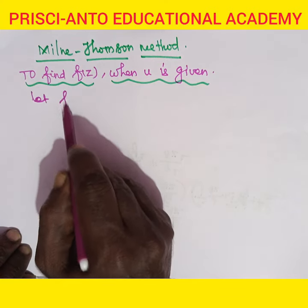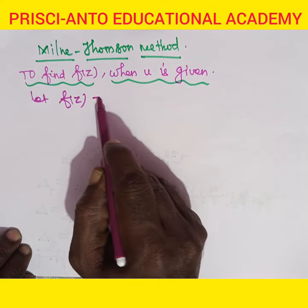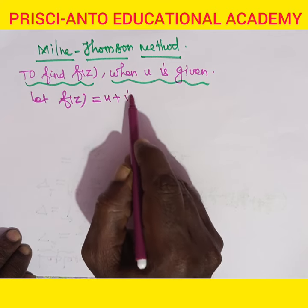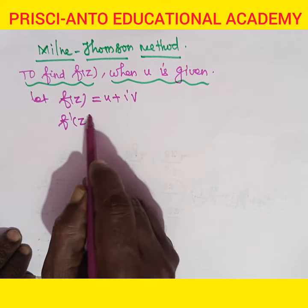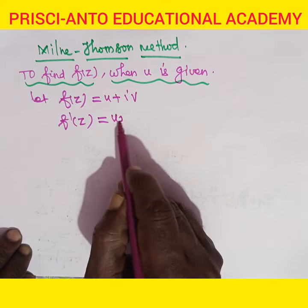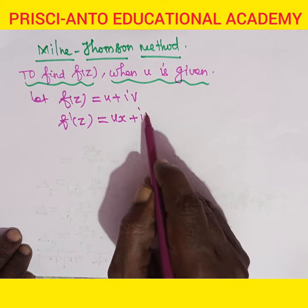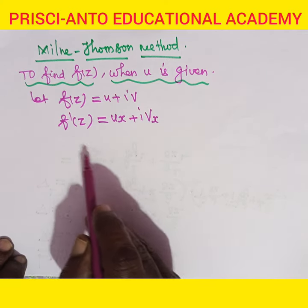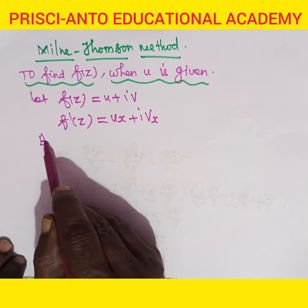Let f of z be equal to u plus iv. Then f dash of z is equal to dou u by dou x plus i into dou v by dou x. By the Cauchy-Riemann equation,